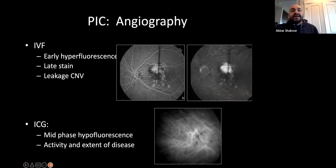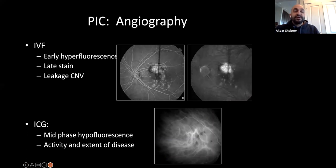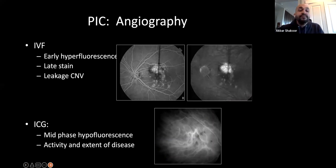Can you treat PIC patients with immunosuppression? Yes — if you have bilateral disease and one eye is severely affected and the other is threatened, you can consider it and it is in fact useful. But conventionally, you treat these with anti-VEGF and intravitreal steroids.